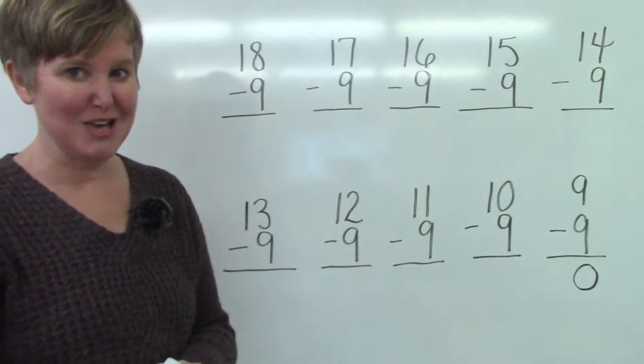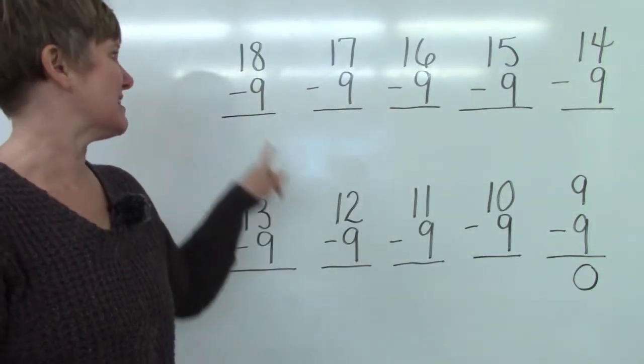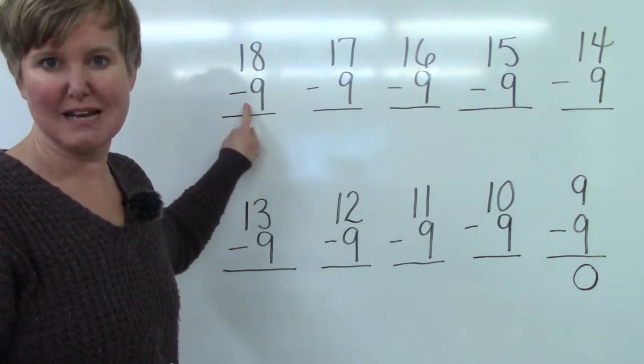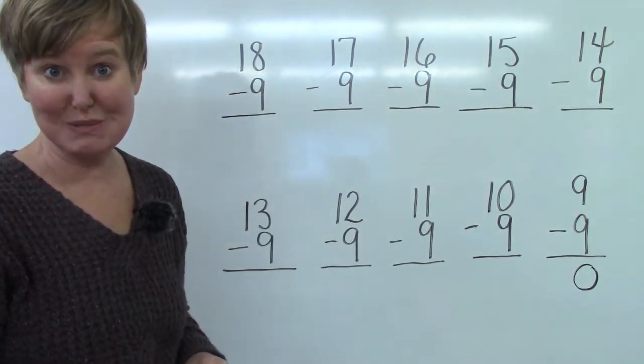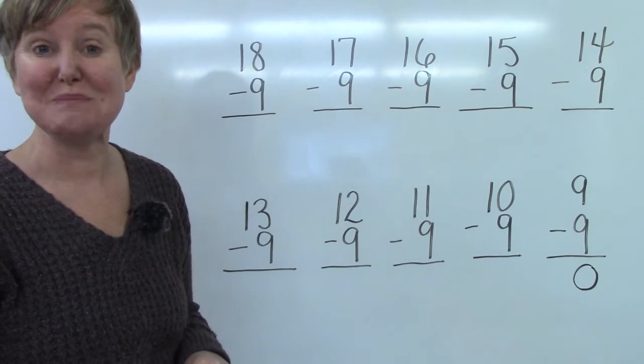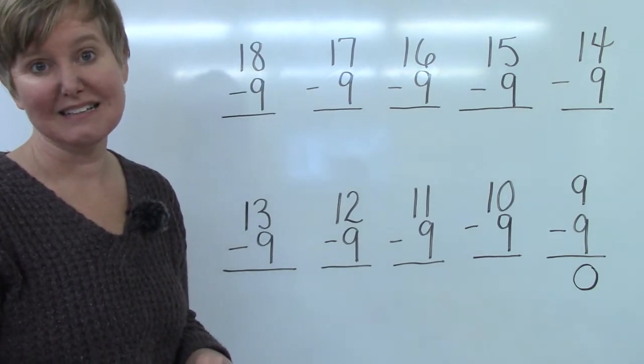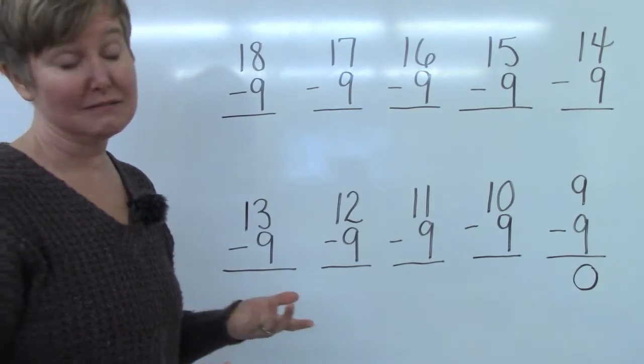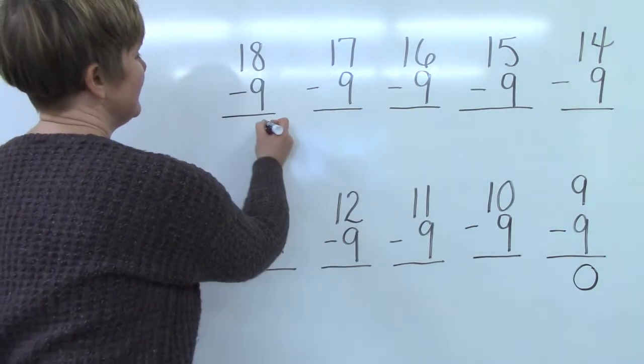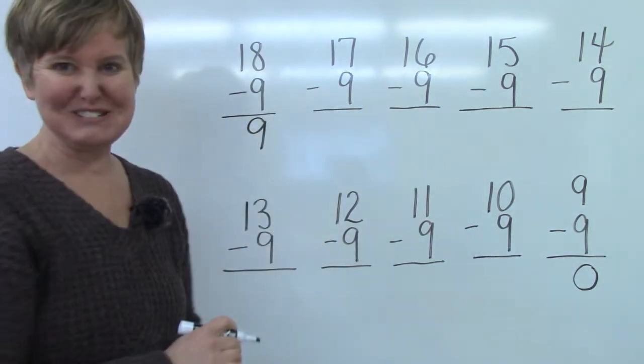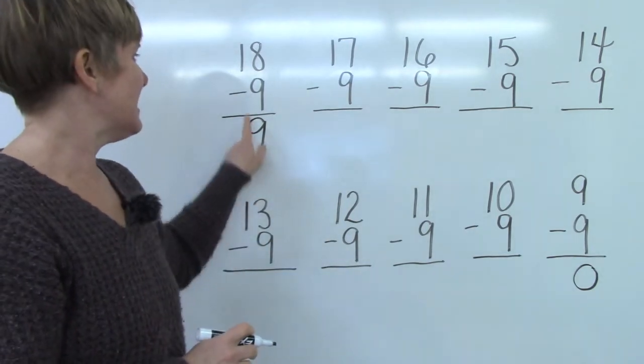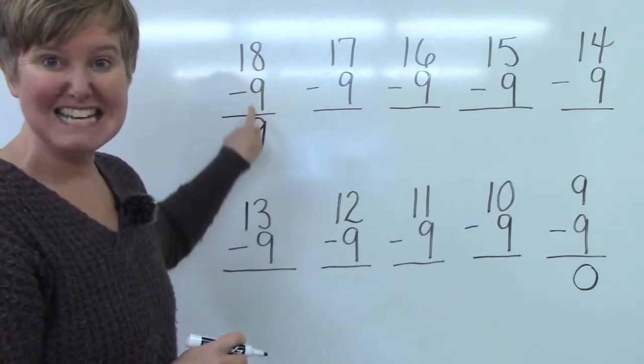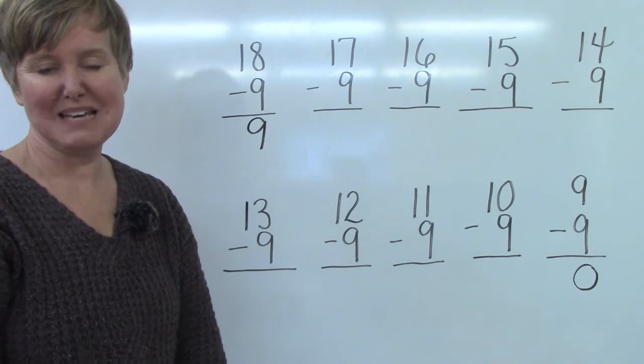The other one that you might be able to recognize is eighteen minus nine. If you know your doubles facts you know that nine plus nine is eighteen. And so if you have eighteen and you take nine away well that was half of it. So your answer is going to be nine. Nine plus nine equals eighteen and eighteen minus nine is nine.